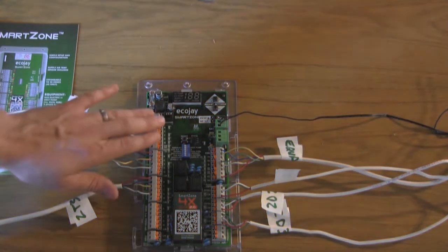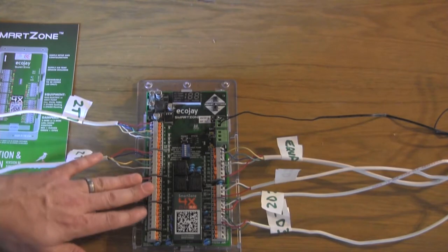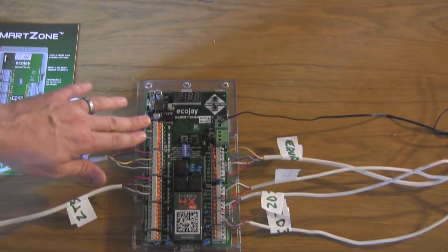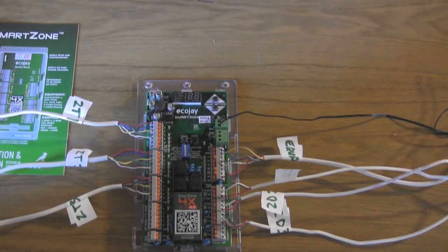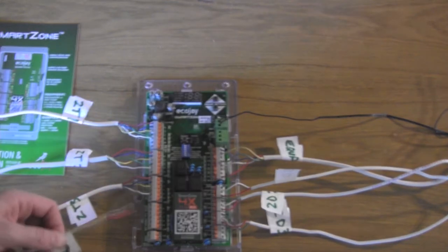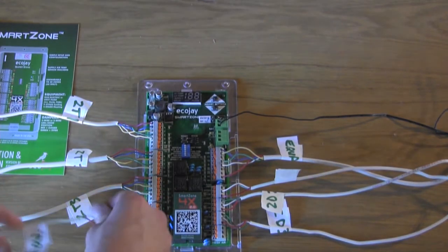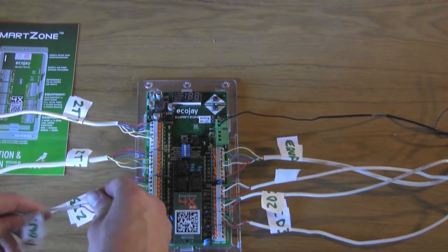Before you power the board, you should recheck all of your wiring to make sure that there's no shorts and that all the wires are plugged in securely. Finally, we'll plug the power wire in. The transformer powering this power wire should be off.